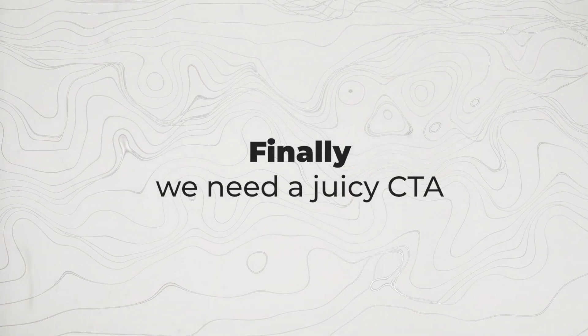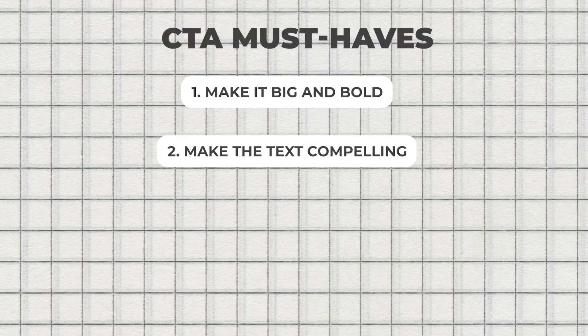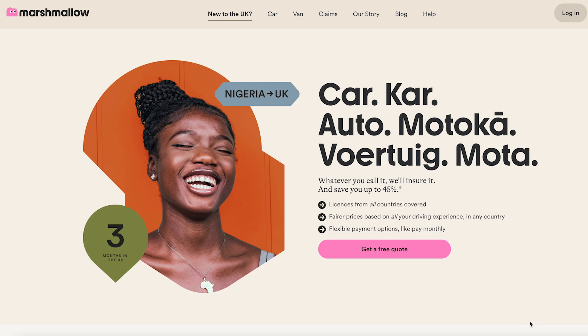Finally, we need a juicy CTA. This is the most important part — it's the element that the rest of the content on your page is designed to drive visitors' attention to, and it's what ultimately converts visitors into customers. Here are a few CTA must-haves: make it big and bold so you can't miss it; make the text compelling — don't just use the word 'submit', instead use something explosive, exciting or persuasive; use a button, ideally with a contrasting colour, as contrasting colours help attract the eye and compel a click. A great example of this is from Marshmallow, using a contrasting colour and compelling text to entice the user to click.